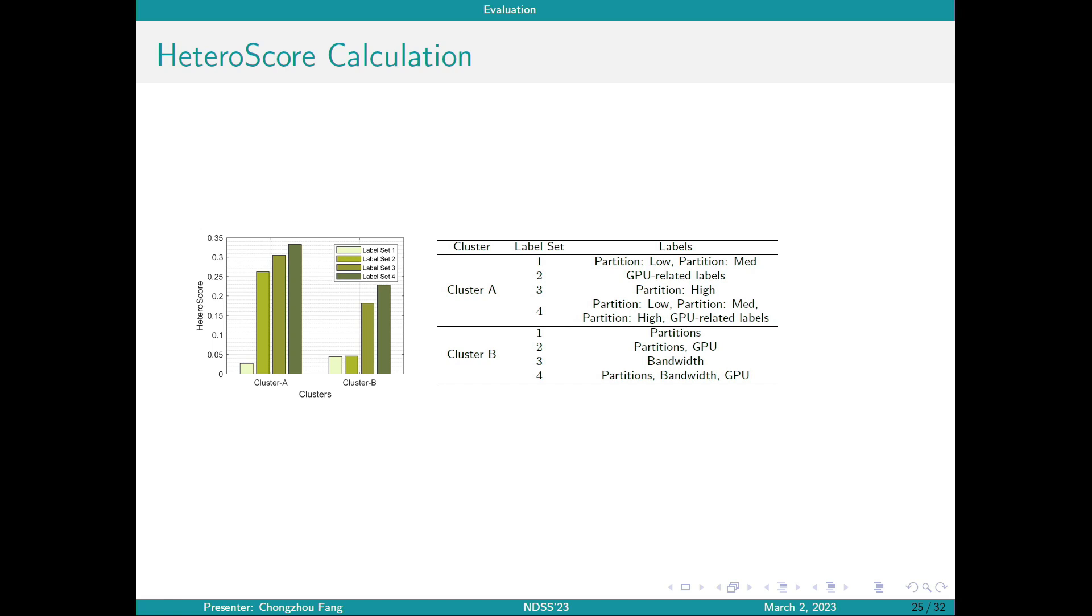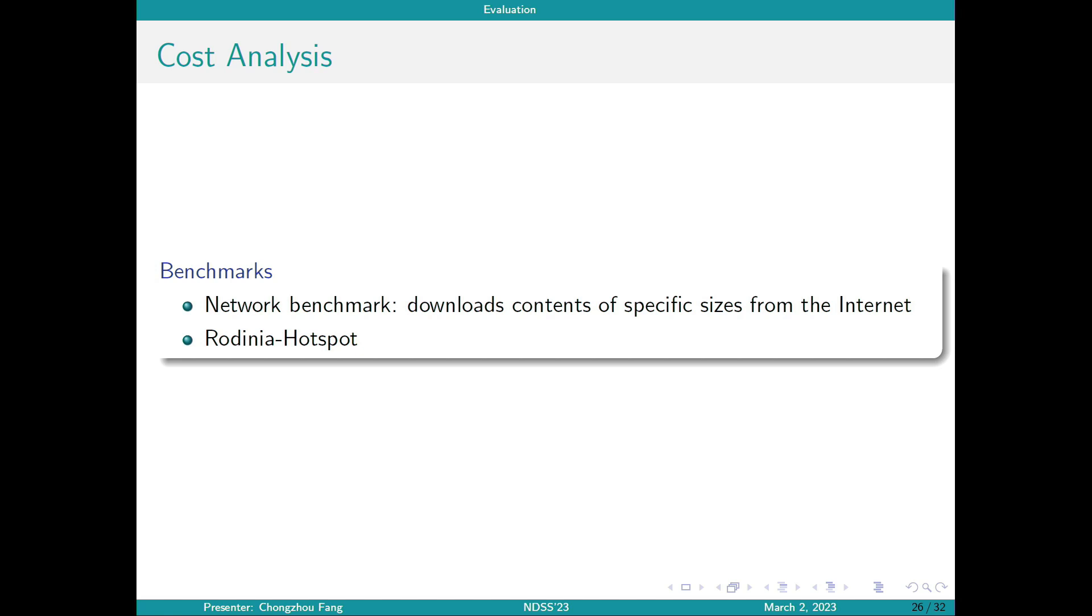The larger the label set number is, the more labels are involved in our calculation. We can see that in these production clusters, our heteroscore metric is also able to reflect heterogeneity level of all of them. Then we conduct a performance cost analysis of defense mechanisms. We use two types of benchmark tasks in our experiments. The first one is a network benchmark that downloads certain contents of specific size from the internet, and the second one is a CPU version of hotspot benchmark from Rodinia benchmark set. During the experiments, we will hide a network related label and use it as an example to show the performance cost of hiding certain performance related labels.